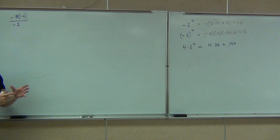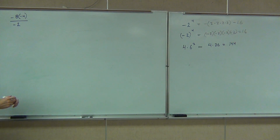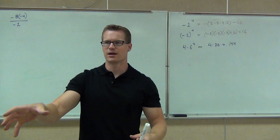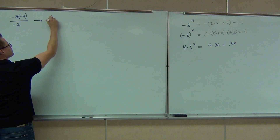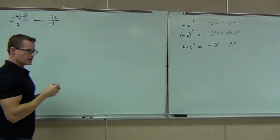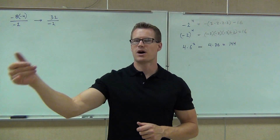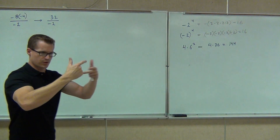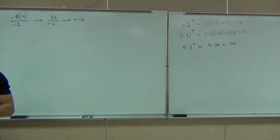Division makes an implied parenthesis around the numerator. So we do that part first: negative 8 times negative 4 is positive 32. Now we have positive 32 over negative 2. Positive 32 divided by negative 2 — applying the multiplication/division sign rule — gives us negative 16. As long as we go step by step, we get these things down.